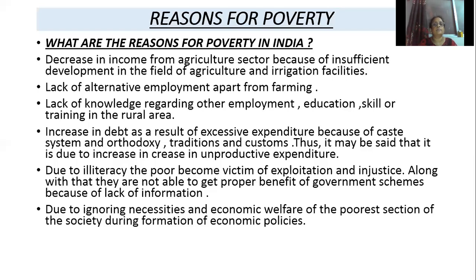The fifth reason is illiteracy — the poor become victims of exploitation and injustice. They are exploited by educated people and face injustice due to their illiteracy. Along with that, they are not able to get the proper benefit of government schemes because of a lack of information.